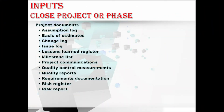Coming to the next input, we have the project documents, which contain the assumption log, basis of estimates, change log, issue log, lessons learned register, milestones list, project communications, quality control measurements, quality reports, requirements documentation, risk register, and risk report. Let me explain each one in detail, starting with the assumption log.